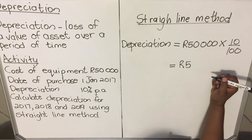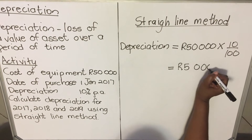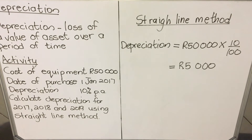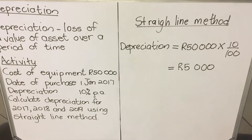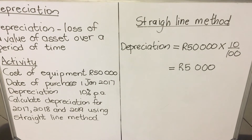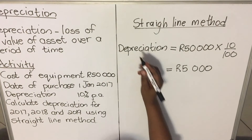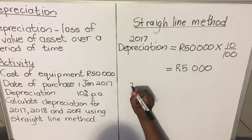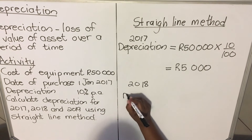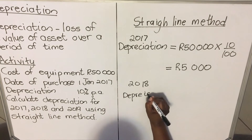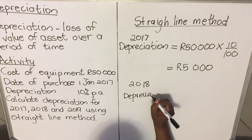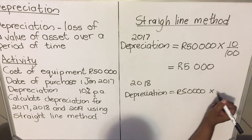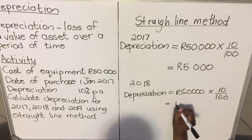When you calculate that, fifty thousand times ten divided by one hundred, the equipment will depreciate by five thousand for the first year. The straight-line method is the easiest — for every year you use the original amount and the same percentage, so you get the same value each year. For 2018, depreciation is also fifty thousand multiplied by ten divided by one hundred, giving five thousand.